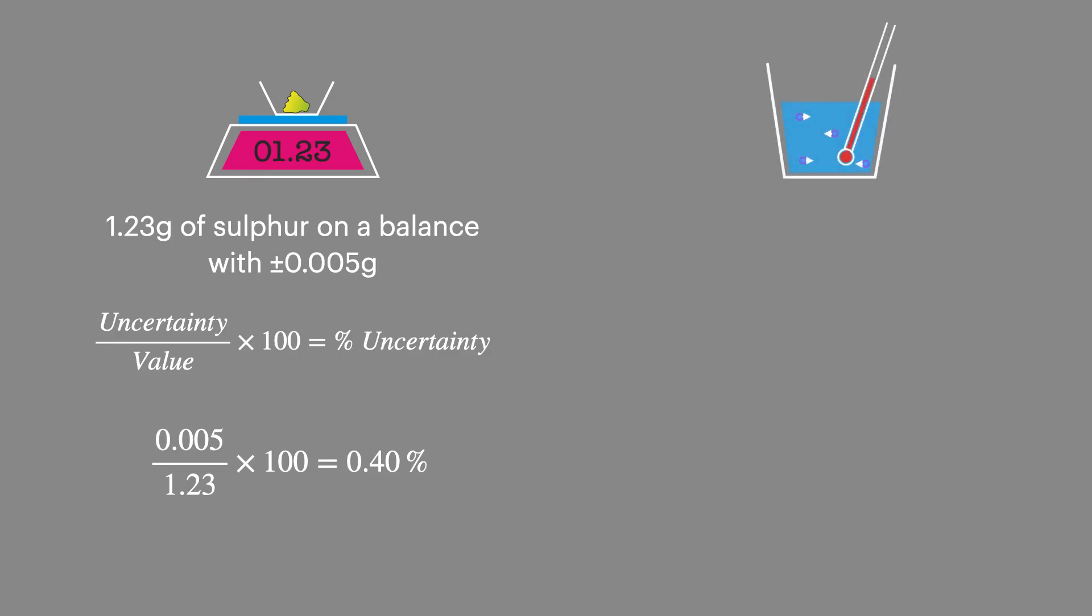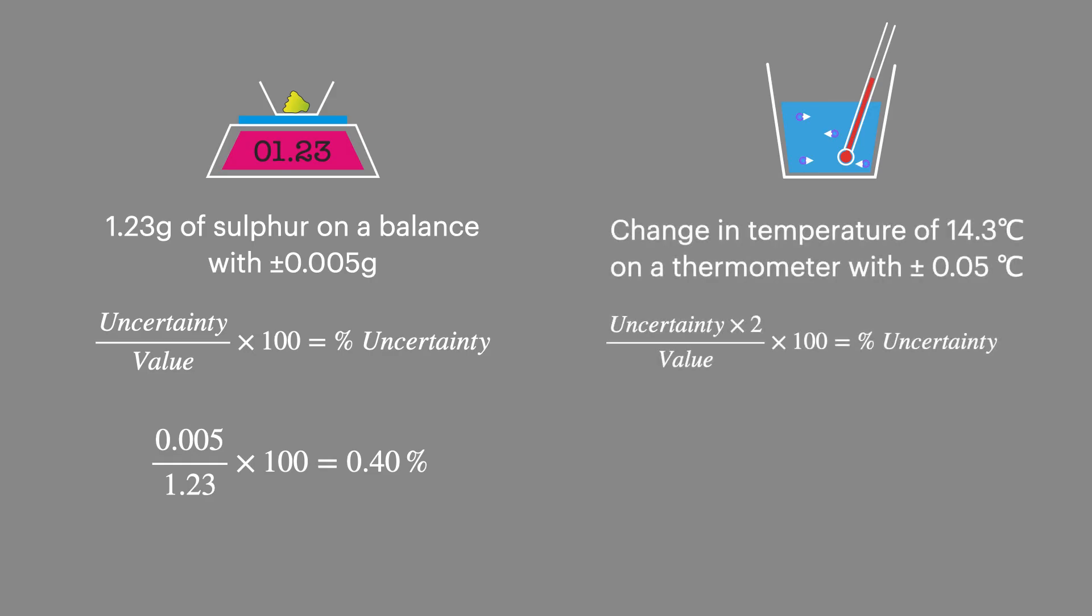In our second example, we're looking at a temperature change. This has two readings. So this time, we'll multiply the uncertainty by 2. This works out at 0.69%.